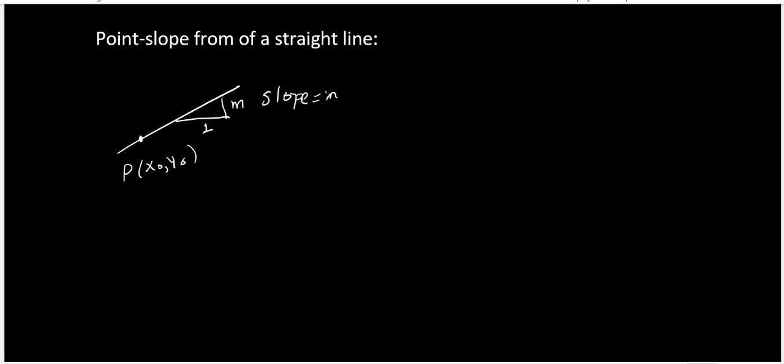Point slope form of a straight line. Suppose this straight line passes through the point P whose coordinates are x naught y naught and the slope of that line is m.